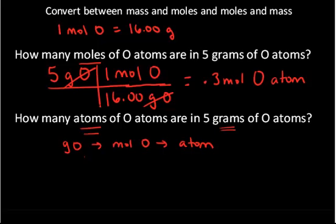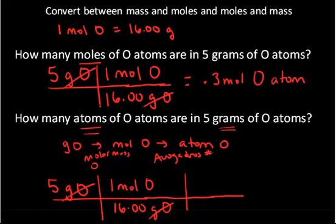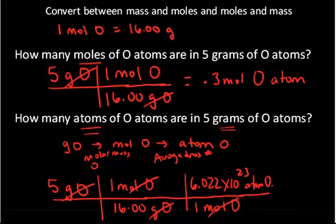The conversion factors we'll use are the molar mass of oxygen for the first step, and Avogadro's number to go from moles to atoms. Starting with 5 grams of oxygen, for every 1 mole of oxygen it's 16.00 grams of oxygen — the gram unit cancels, putting us in units of moles. Then for every 1 mole of oxygen, I have 6.022 × 10²³ atoms of oxygen. The mole unit cancels, and doing the math gives about 2 × 10²³ atoms of oxygen.